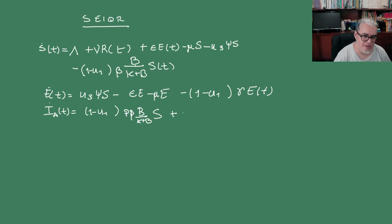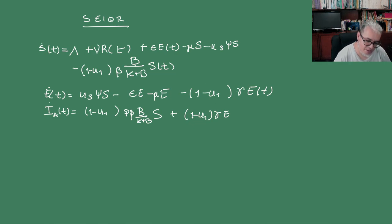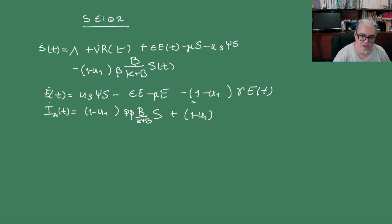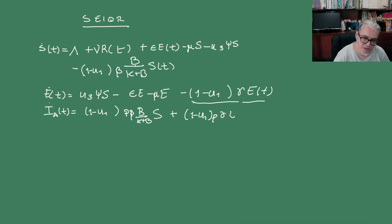De todos los expuestos que desarrollan la enfermedad, unos van a tener síntomas y los otros no. Los que no tienen síntomas son una fracción P: esto es P por gamma por E. Se les restan los que mueren por causas naturales y los que van a desarrollar síntomas. Los que sí desarrollan síntomas son (1 - U1) por (1 - P) por beta_B por la respuesta funcional por S, más (1 - U1) por (1 - P) por gamma por E, menos mu por Is.